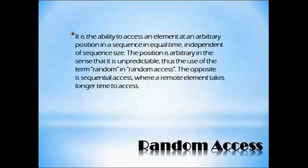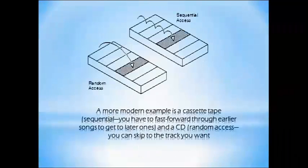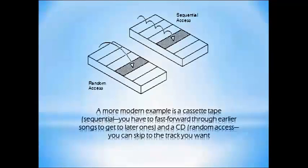Random Access is the ability to access an element at an arbitrary position in a sequence in equal time, independent of sequence size. The position is arbitrary in the sense that it is unpredictable, hence the term 'random' in random access. The opposite is sequential access, where a remote element takes longer to access. A modern example is a cassette, where you have to fast-forward through earlier songs to get to a later one, whereas on a CD you just skip to the track you want.